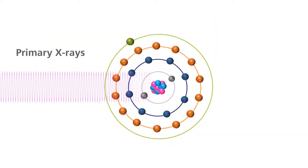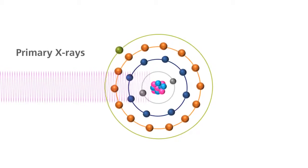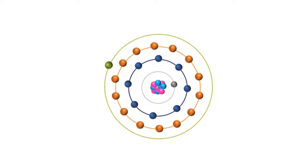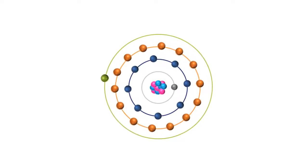When a high-energy primary X-ray collides with an atom, it disturbs its equilibrium. An electron is ejected from a low energy level, and a vacancy is created, making the atom unstable.